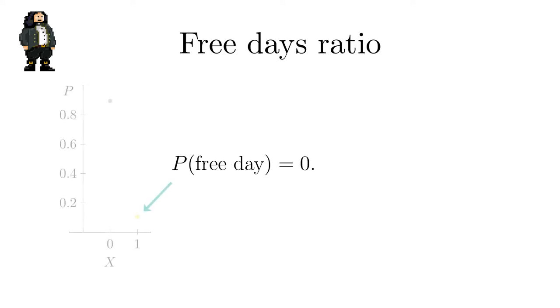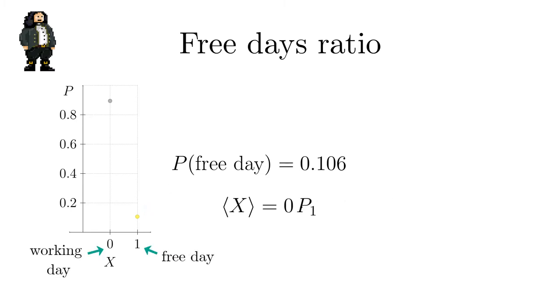Let's use this insight to answer the second question about the free days ratio in a period of n days. Bernoulli determines the probability of having a day off by using the golden ratio to be 0.106. As you can easily see this is also the average value of the free days ratio. A similar calculation yields for the standard deviation of the free days ratio a value of 0.307.